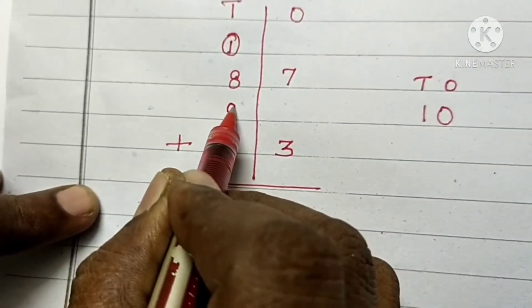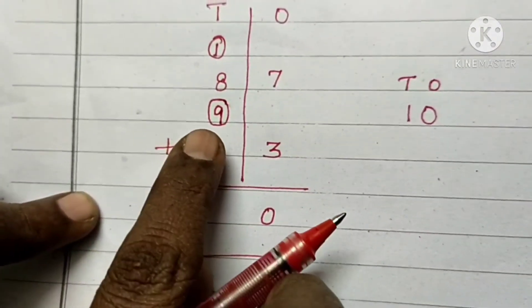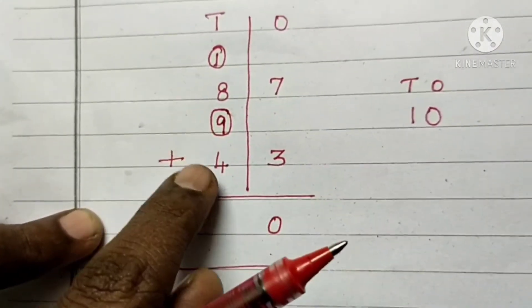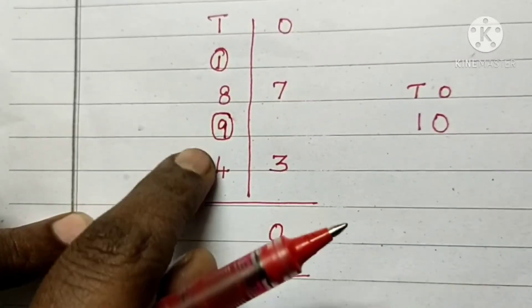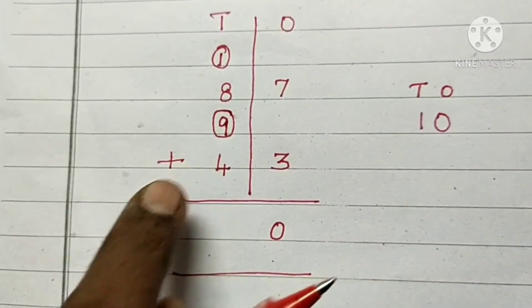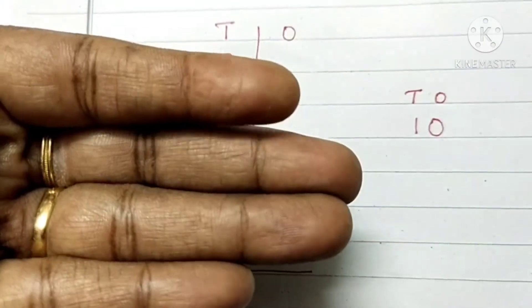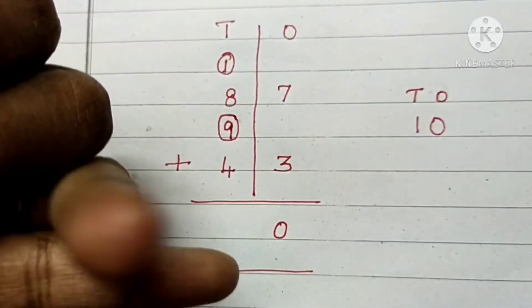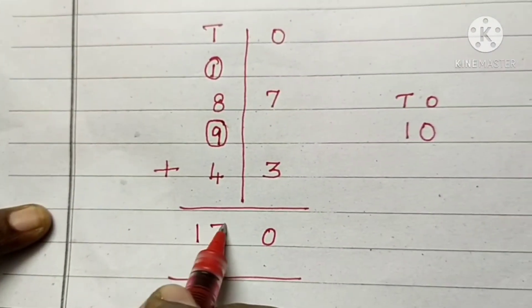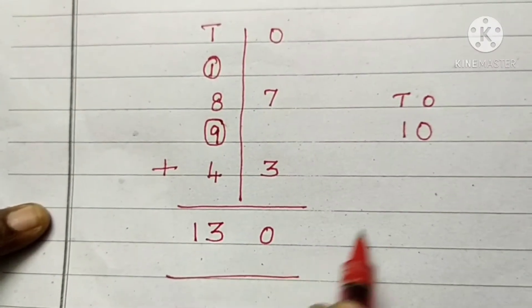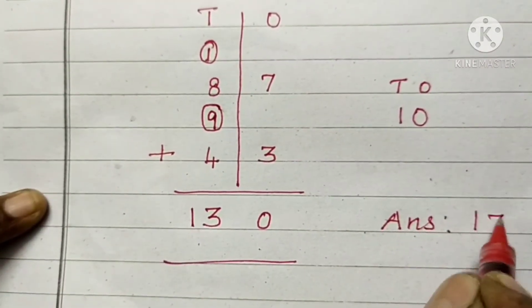9. Very good. 9 in the mind, 4 in the fingers. After 9: 10, 11, 12, 13. Write 13 here. The answer is 130.